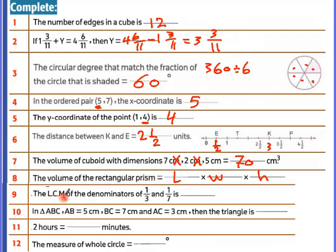The LCM — same denominator: the smaller denominator doesn't work like the larger one here. One denominator is a prime number and the other denominator is also a prime number, so we multiply them: 3 times 7 equals 21. The LCM for the denominators, since both are prime numbers, is found by multiplying them.